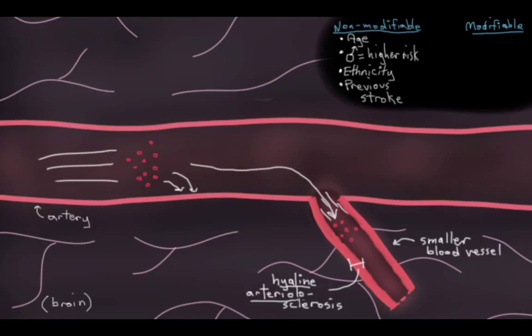Arteriolo just refers to the fact that it's happening in a smaller artery, so an arteriole. And sclerosis just refers to hardening, so hyaline arteriolosclerosis.